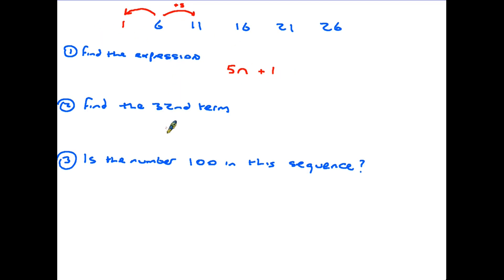Now it says find the 32nd term. So in this case we have to substitute the n for the number 32. So we have 5 times n becomes 32 plus 1. And using BIDMAS, 5 times 32 is 160 plus 1 equals 161. Therefore the 32nd term in this sequence would be 161.